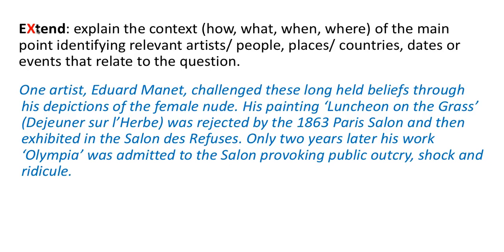Now we're going to extend on our topic sentence — giving context: who, what, when, where, how of the main point, identifying relevant artists, people, places, countries, dates, or events. I've chosen Edouard Manet. One artist, Edouard Manet, challenged long-held beliefs through his depictions of the female nude. His painting 'Luncheon on the Grass' (Le Déjeuner sur l'herbe) was rejected by the 1863 Paris Salon and then exhibited in the Salon des Refusés. Only two years later his work 'Olympia' was admitted to the Salon, provoking public outcry and ridicule.